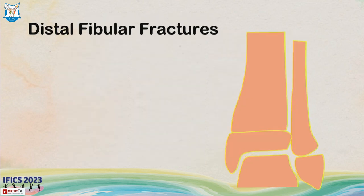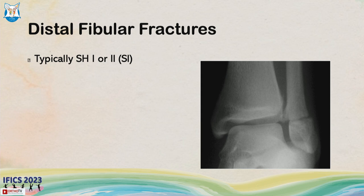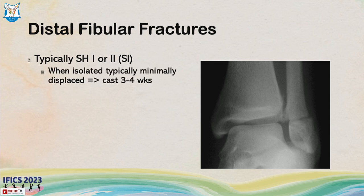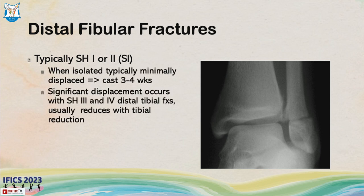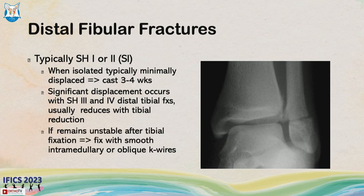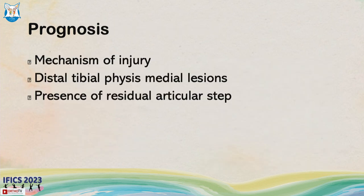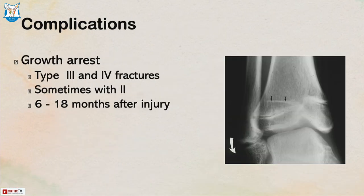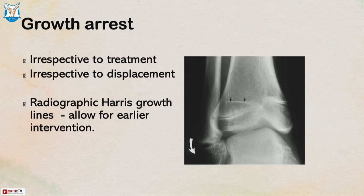Distal fibular fractures are extremely common. They can be Salter-Harris type 1 — fracture through the physis — or type 2 with a small metaphyseal fragment, and they heal quickly in cast for three to four weeks. Some stable fractures don't even require immobilization. Growth arrest rates are extremely high, occurring irrespective of treatment or displacement, so close radiographic follow-up is important.